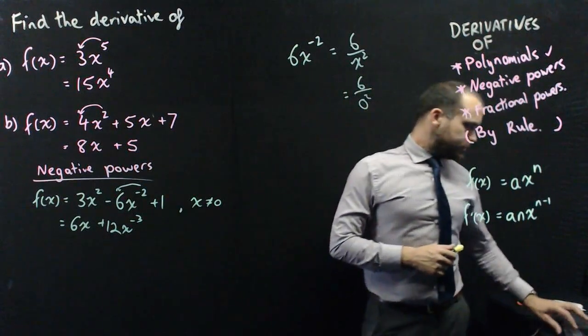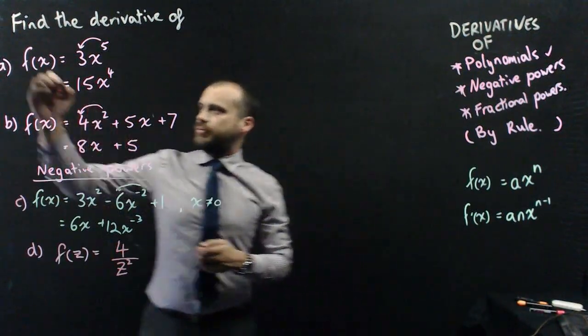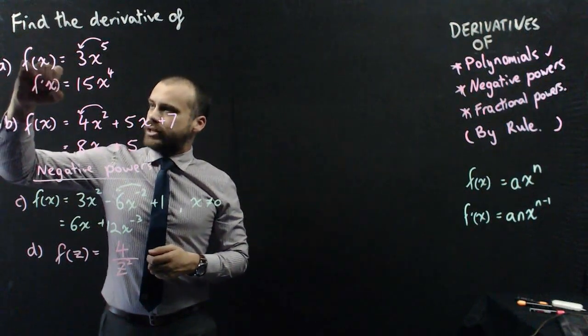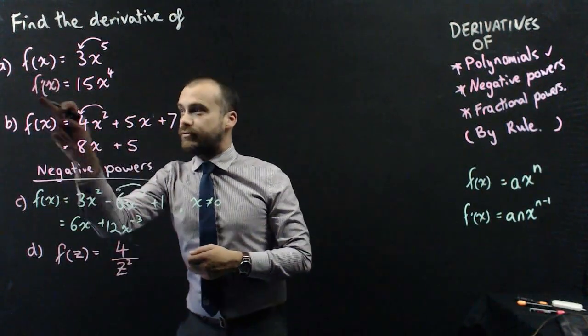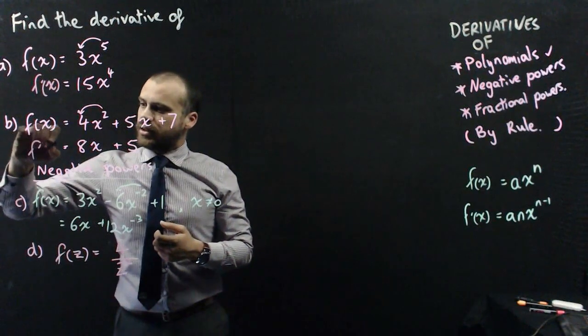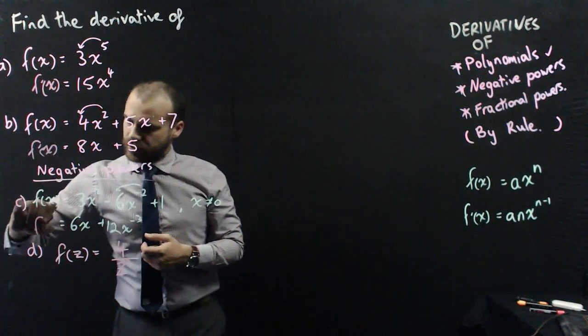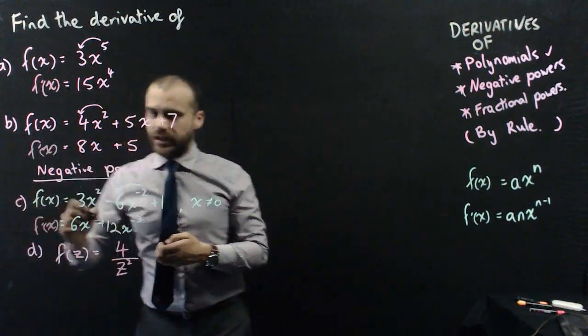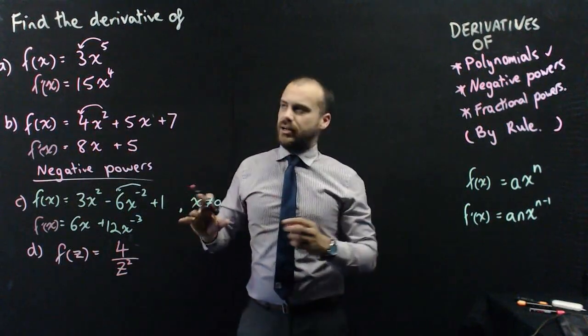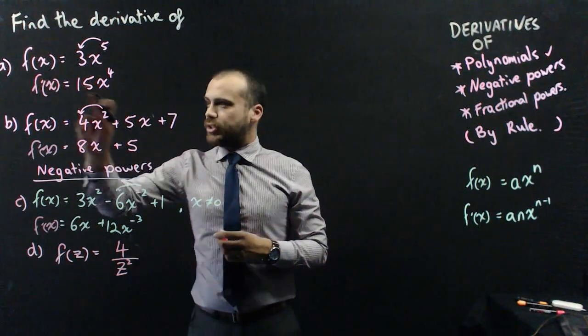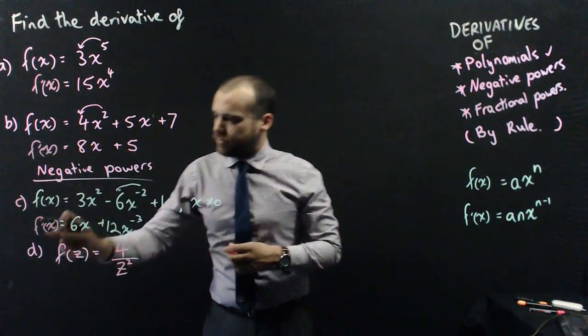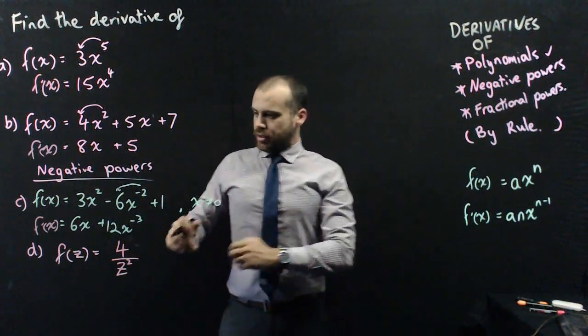Negative powers, just realized I've been really lazy here. I've been talking about derivatives, but I've been not writing it in. f of x and then f dash of x. That's the derivative. That's the derivative. That's the derivative. Don't do what I've just done. That's terrible. That says f of x is that. It's not. f dash of x is that. f dash of x is that. f dash of x. That's the derivative.